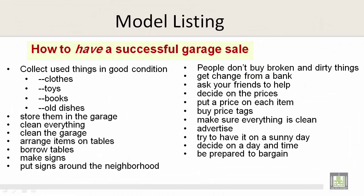Model listing: How to have a successful garage sale. Let's look at some of the things that you need to do in order to have a successful garage sale in a model listing. You should collect used things in good condition such as clothes, toys, books, and old dishes. Store them in a garage. Clean everything. Clean the garage. Arrange items on tables. Borrow tables. Make signs and put signs around the neighborhood.